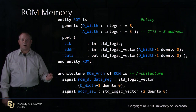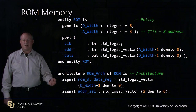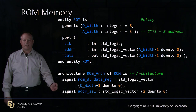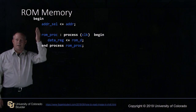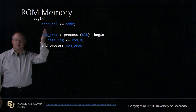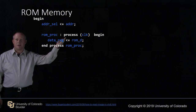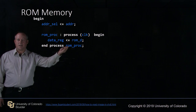Here we begin our architecture — ROM architecture of ROM — with signals ROM data and data reg of standard logic vector data width minus 1 down to 0, and a signal address select 2 down to 0. We begin the architecture: address select equals address. We create our initial process based on clock in the sensitivity list, where data reg gets ROM data.